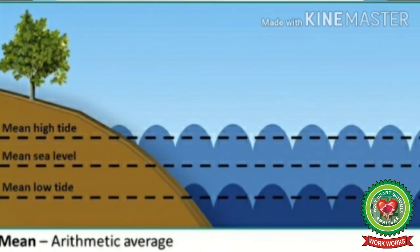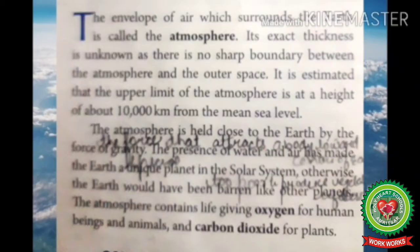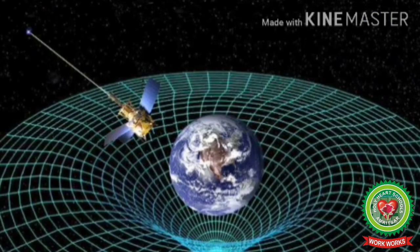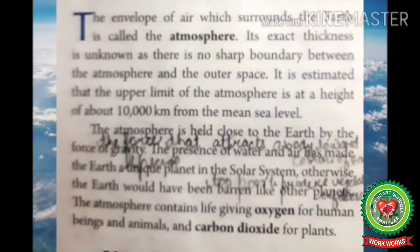We always take the mean sea level as zero. The atmosphere is held close to the earth by the force of gravity — gravity is the force that attracts a body towards the center of the earth. The presence of water and air has made the earth a unique, that is a special, planet in the solar system. Solar system means the sun with its family of eight planets.